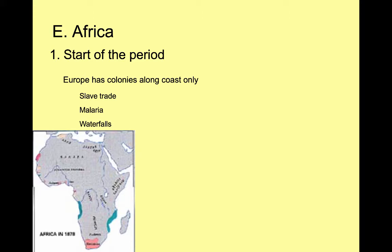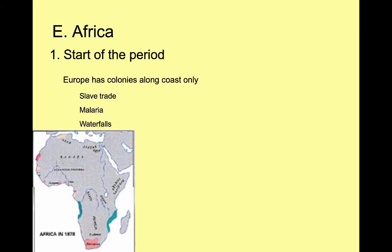Europeans would show up on the coast and trade with coastal African tribes, who would then go inland, get Africans, and bring them back to the coast in return for guns and finished products. But the Europeans really didn't go inland in Africa, because of several factors. One was malaria — a disease transferred by mosquitoes through the blood — and the Europeans had no defense against it. So Europeans didn't want to go into Africa because they would most likely die from malaria.